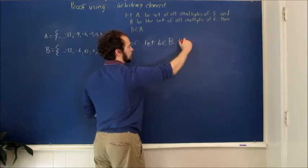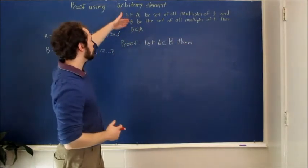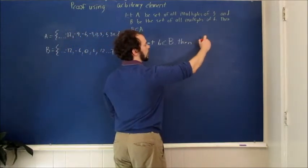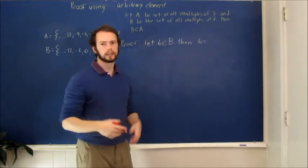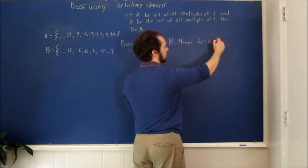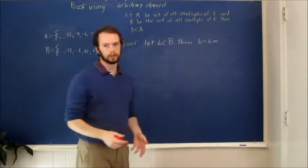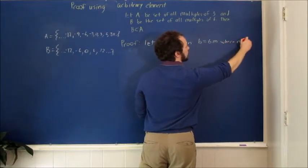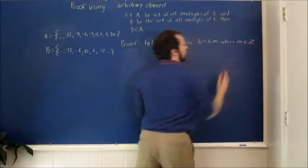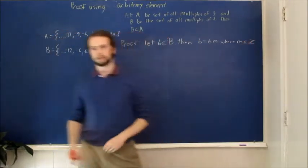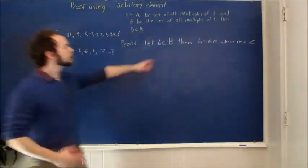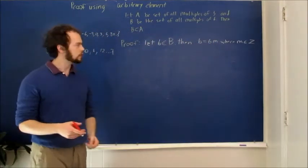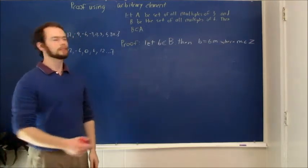Then, by definition of the way I defined set B, this element of B can be written as 6 times some integer m, where m is an element of the integers. So this little b can be written as 6 times an integer—that's what it means to be a multiple of 6.